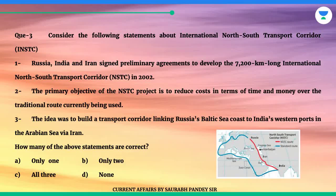Question 3. Consider the following statements about the International North-South Transport Corridor, INSTC. Statement 1: Russia, India and Iran signed preliminary agreements to develop the 7,200-kilometer long International North-South Transport Corridor, NSTC, in 2002.